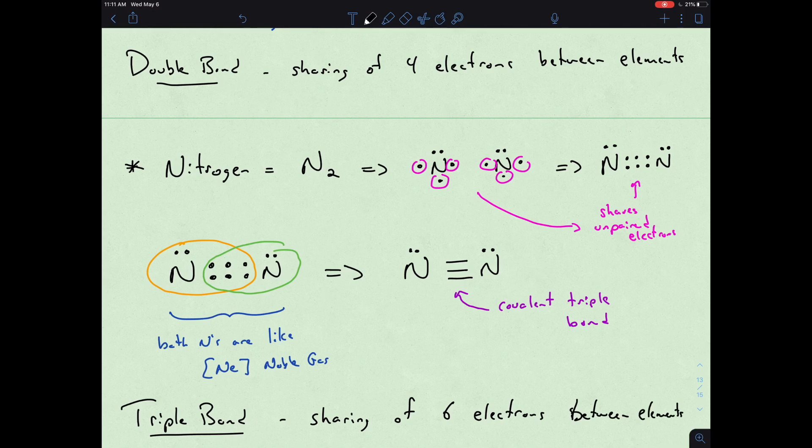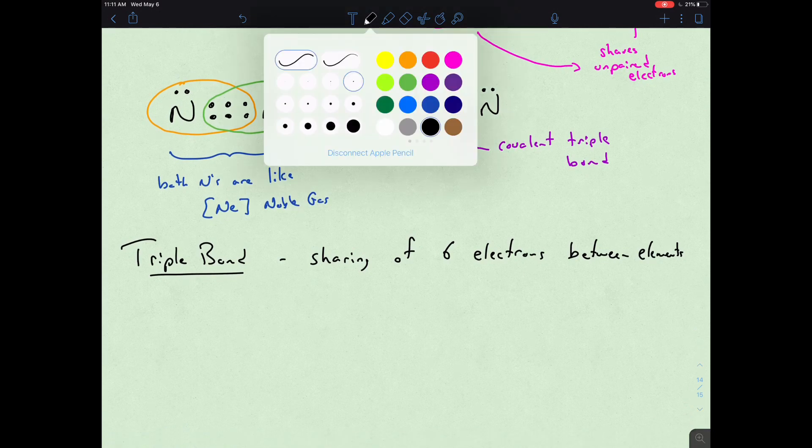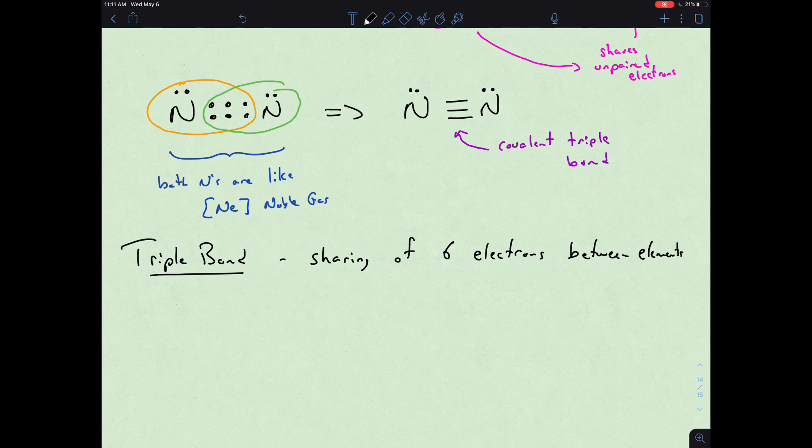So that's two, four, and six: single, double, and finally triple, as far as covalent nomenclature.